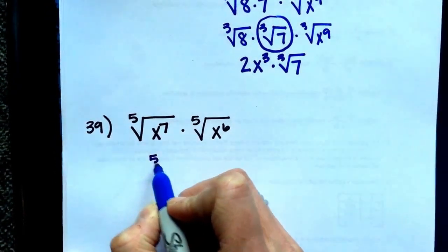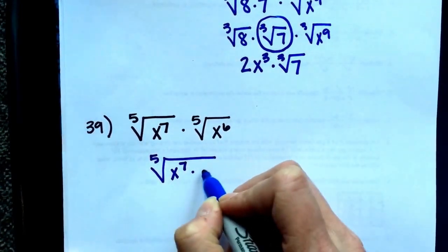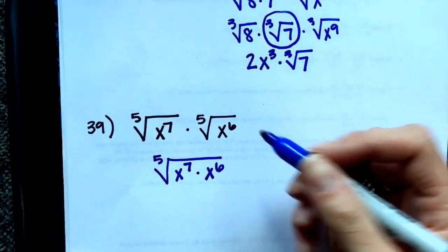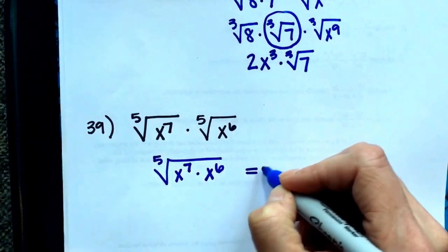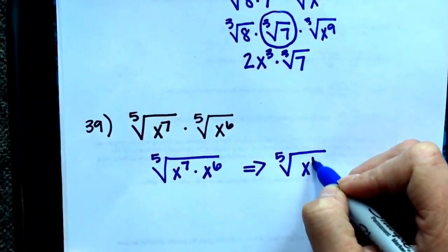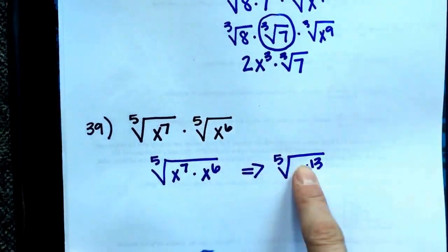The fifth root of, combine these together, x to the seventh times x to the sixth. If you would like to skip writing that step and go directly to the fifth root of x to the 13, you can go directly from here to here.